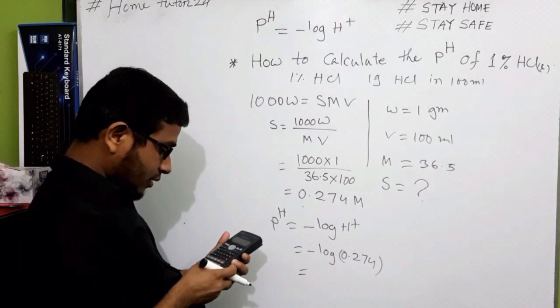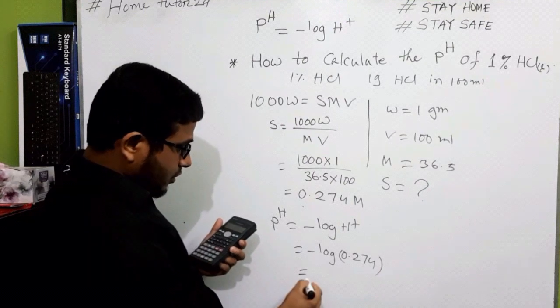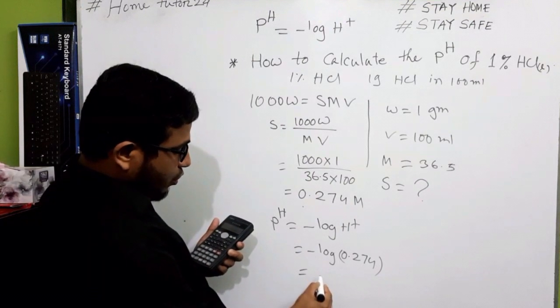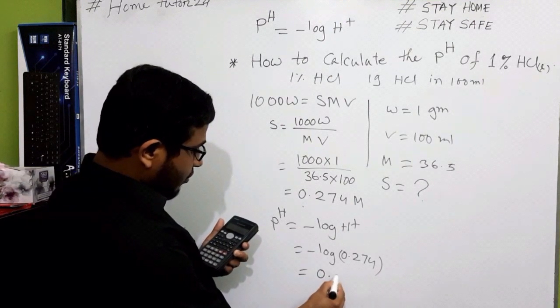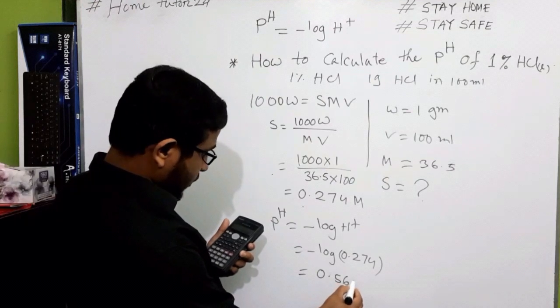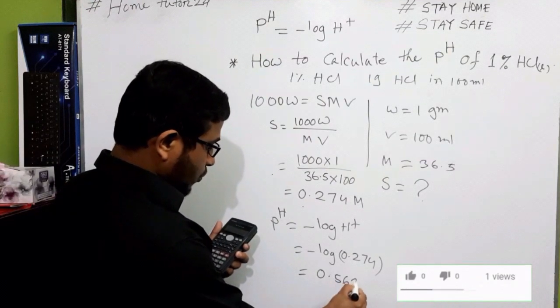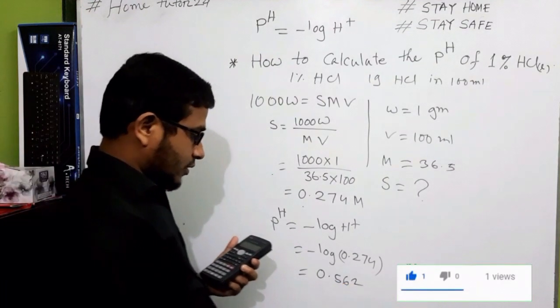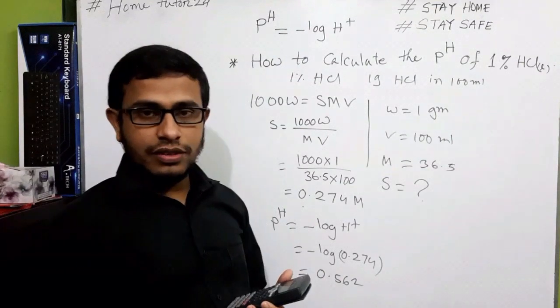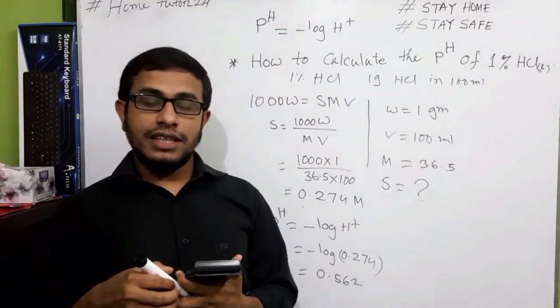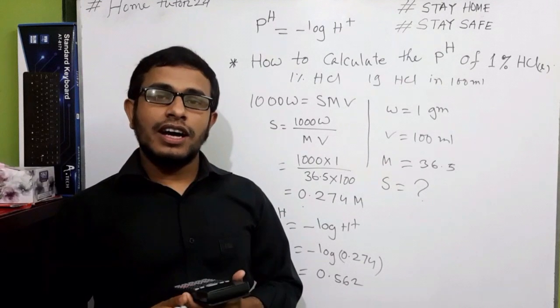So the result will be minus log of 0.274 equals 0.56. I hope you will get it.